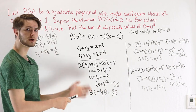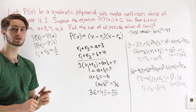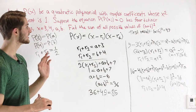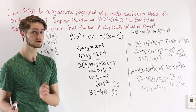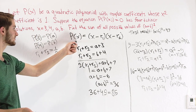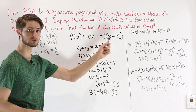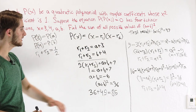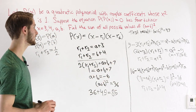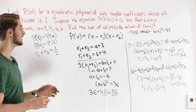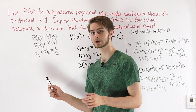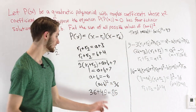A couple of takeaways from this problem: when working with polynomials, it's almost always a good idea to express the polynomial in terms of its roots. Writing p of x as x minus r1 times x minus r2 enabled many simplifications. Beyond that, we just needed to use the properties of quadratic equations to identify the different cases, and that got us to our answer.